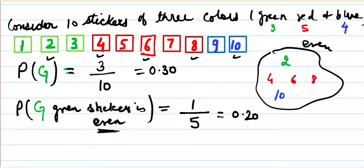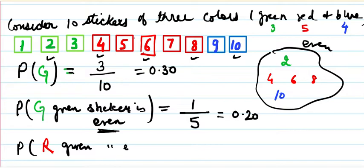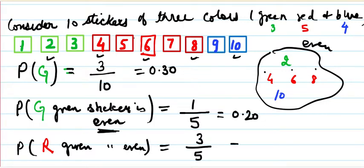Now, what is the probability of getting a red sticker given that it is even? Again, my new sample space is the five even stickers. Among them, 4, 6, and 8 are red — that's three out of five — so there is a 60% chance.